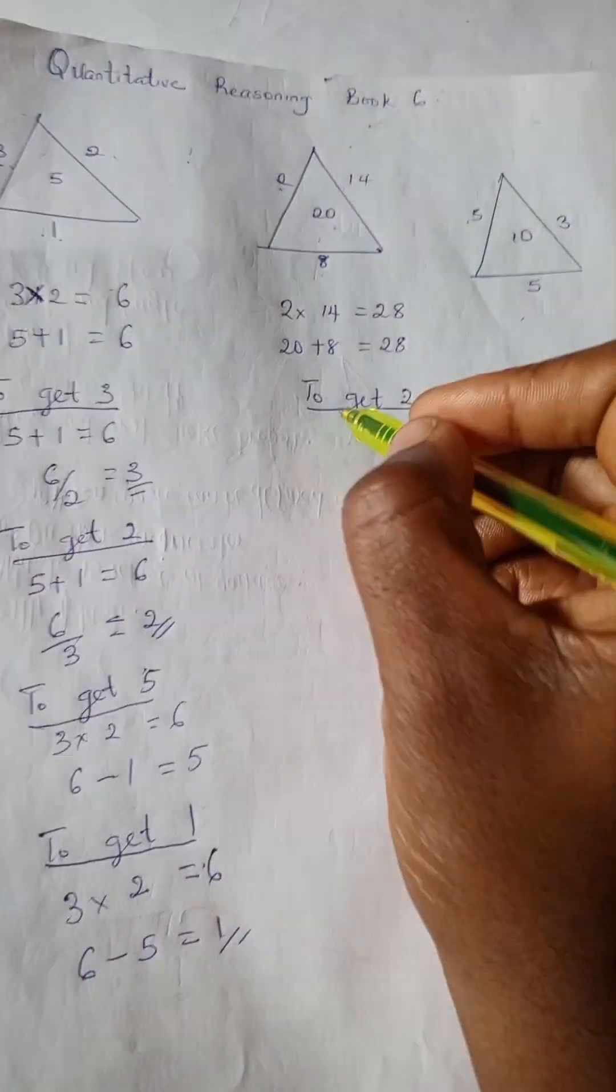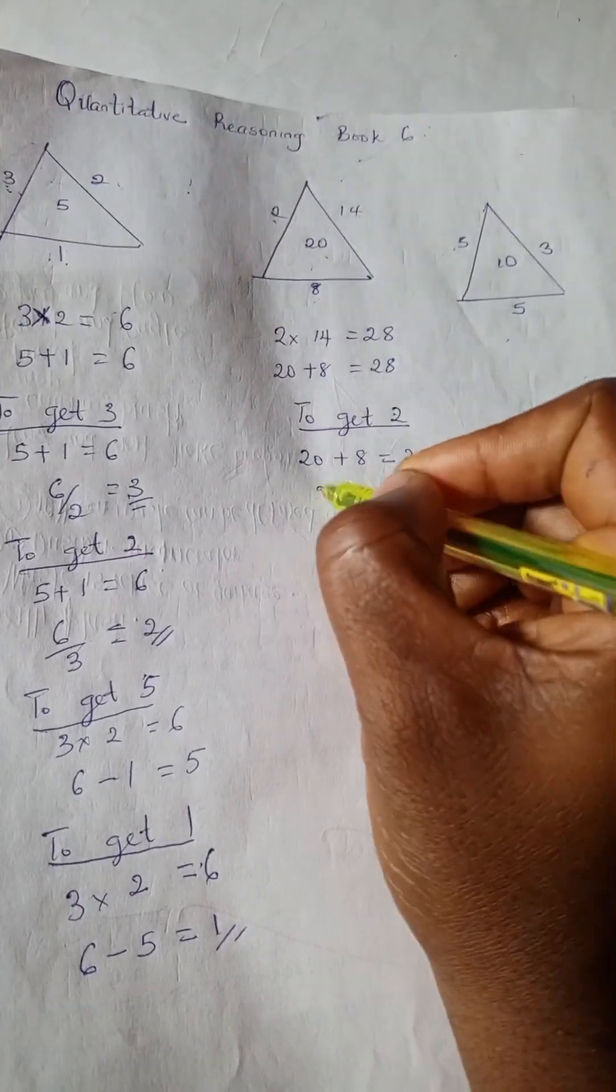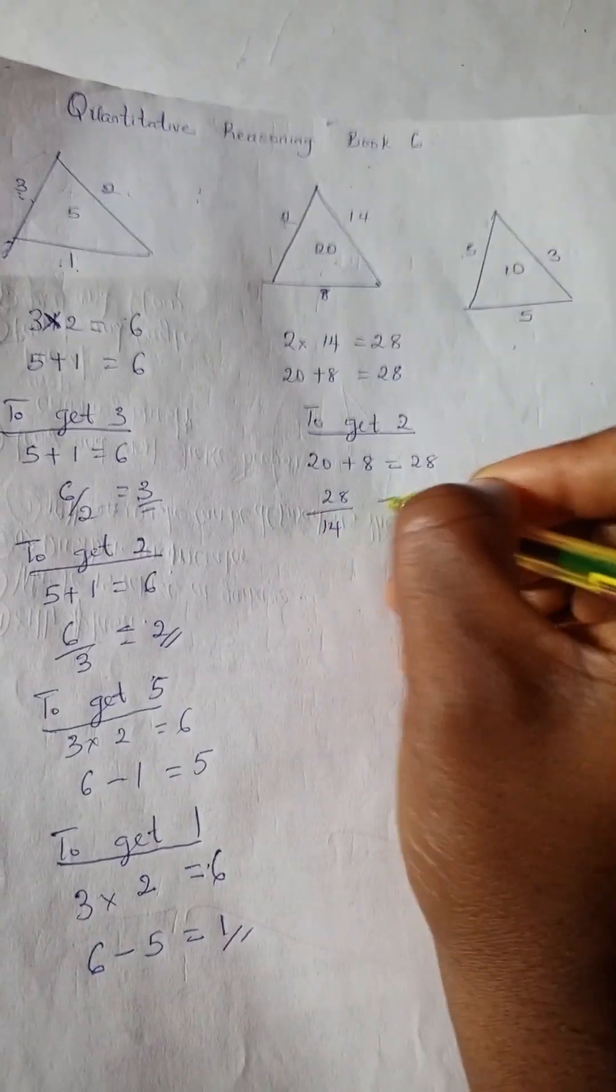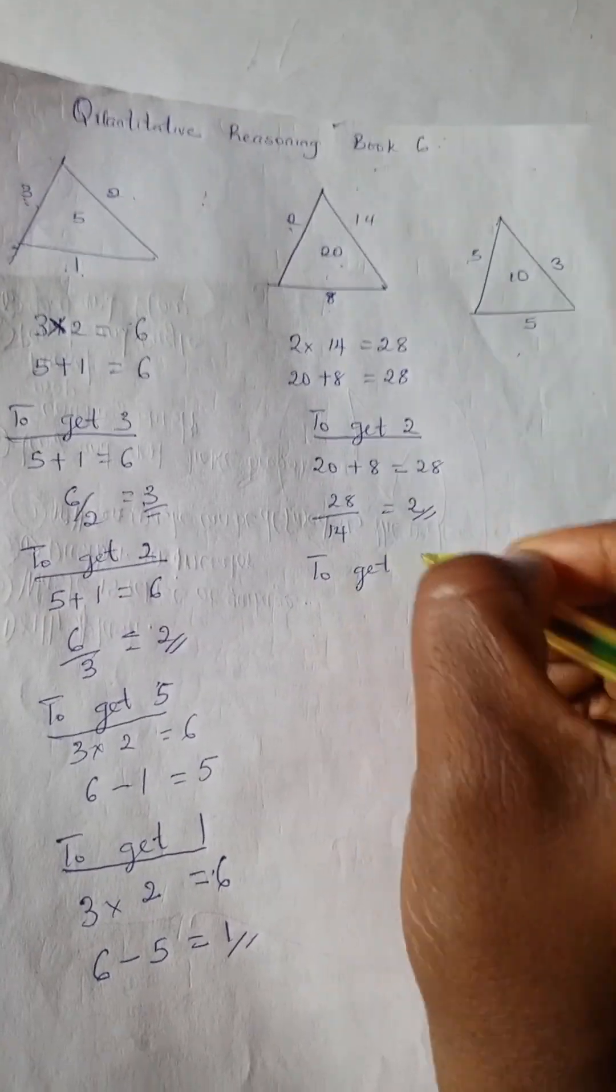To get 2, we have 20 plus 8 is 28, and 28 divided by 14 is 2.